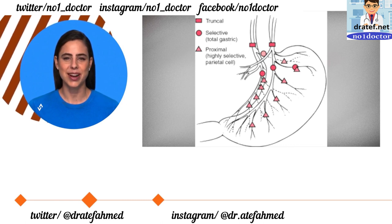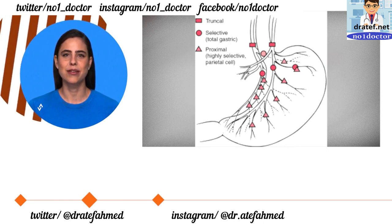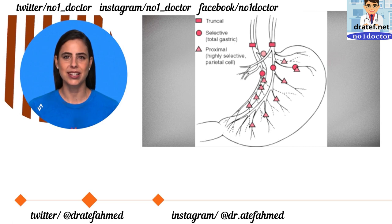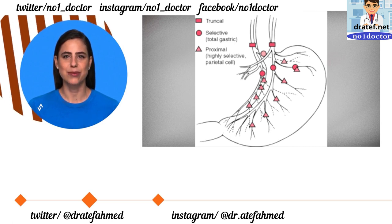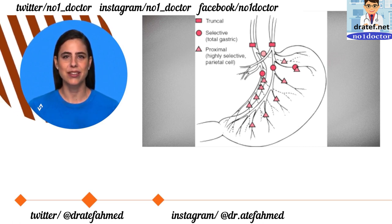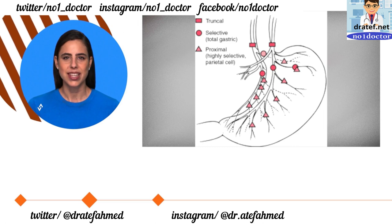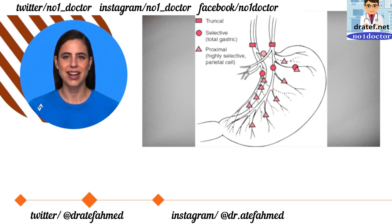Other alterations caused by truncal vagotomy — gastric effects: decrease in acid output by 90 percent, increase in gastrin, and gastrin cell hyperplasia.